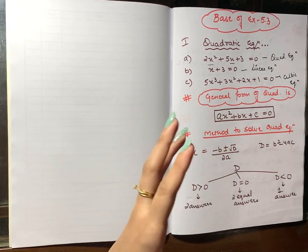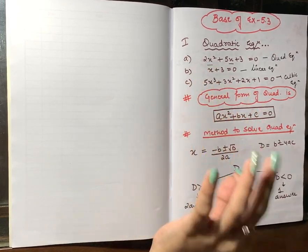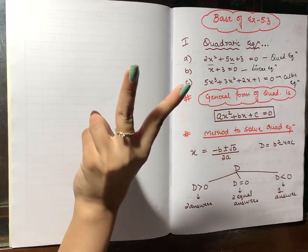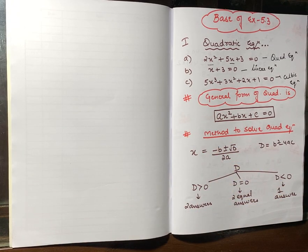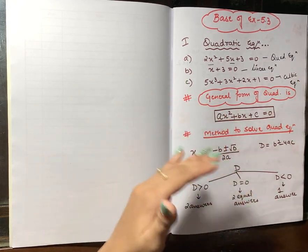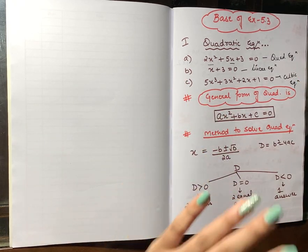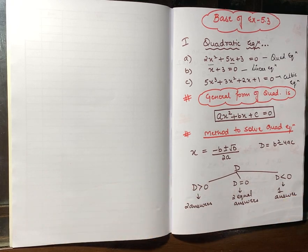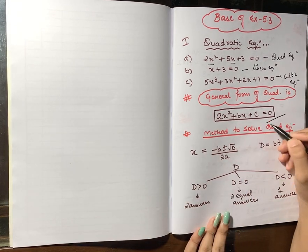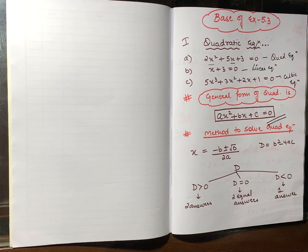This is a concept you have studied before, so there is no rocket science here. The general form I have written is ax² + bx + c = 0. This is the general form of a quadratic equation.